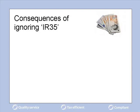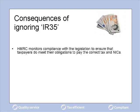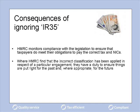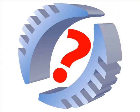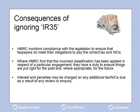Consequences of ignoring IR35. HMRC monitors compliance with the legislation to ensure that taxpayers do meet their obligations to pay the correct tax and NICs. Where HMRC find that incorrect classification has been applied in respect of a particular engagement, they have a duty to ensure things are put right for the past and, where appropriate, for the future. Interest and penalties may be charged on any additional tax and NICs due as a result of any review or inquiry.